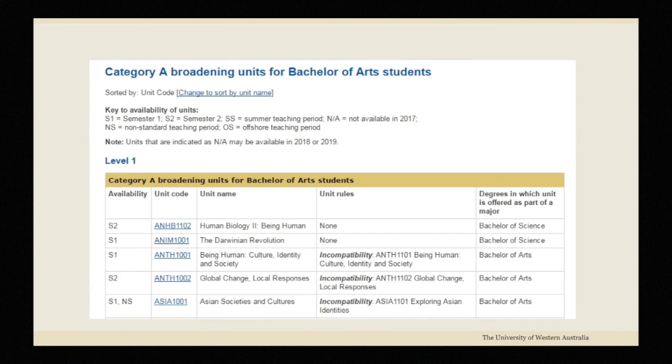For instance, if you're enrolling in a Bachelor of Arts, browse through the list of category A and category B broadening units and check the unit rules to see whether you can enrol. The furthest column on the right indicates what degree the unit comes from so you can ensure that you don't include more than two category A units from within your degree.